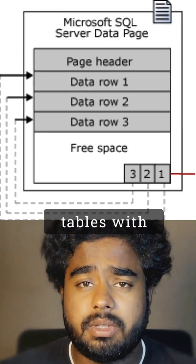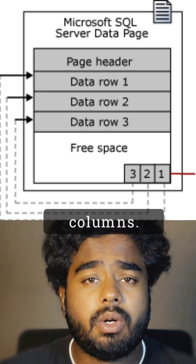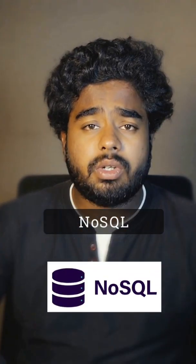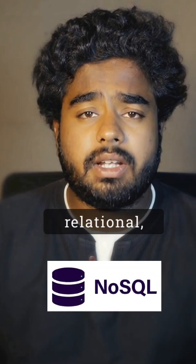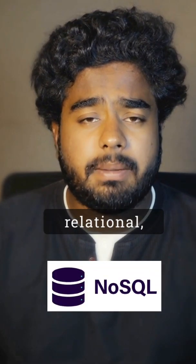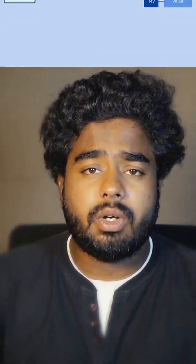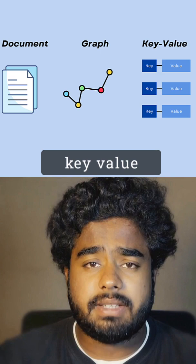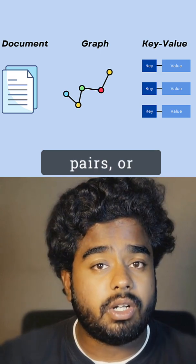SQL databases are relational, meaning they store data in structured tables with rows and columns. NoSQL databases are non-relational, meaning they use flexible structures like documents, key-value pairs, or graphs.